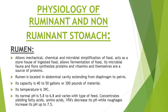The pH of rumen ranges from 5.8 to 6.8 and this pH value varies with the type of feed. Concentrates and VFAs decrease the pH of rumen while roughages increase its pH and they can increase the pH of rumen up to 7.5. Rumen is further divided into two parts: dorsal sac and ventral sac, where the dorsal sac overlaps over the ventral sac.